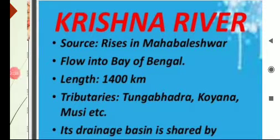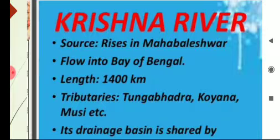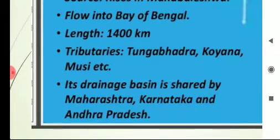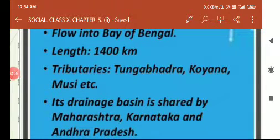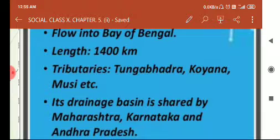River Krishna is also called Krishnaveni river. It rises in Mahabaleshwar of Maharashtra and flows into the Bay of Bengal. Its tributaries include Tungabhadra, Koyana, Musi, etc. Its drainage basin is shared by Maharashtra, Karnataka, and Andhra Pradesh. At Hamsala Devi near Koduru, river Krishna joins the Bay of Bengal. A dam constructed on this river at Vijayawada is Prakasham Barrage, completed in 1959.